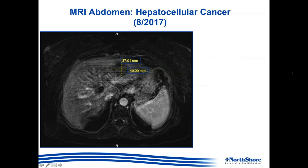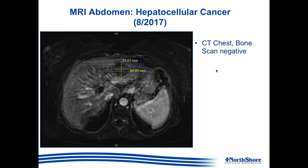The CT scan was followed up with an MRI of the abdomen. As you can see here, it showed a 4 centimeter by 3.7 centimeter lesion in segment 2 of the liver, in the left lobe. Although not visible on this image, there were findings consistent with arterial enhancement and venous washout, concerning for hepatocellular carcinoma. Given these findings, the patient underwent a CT scan of the chest and a bone scan, both of which were negative for metastasis.